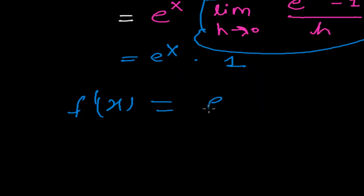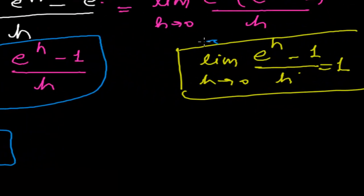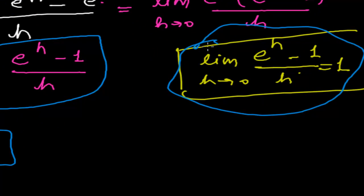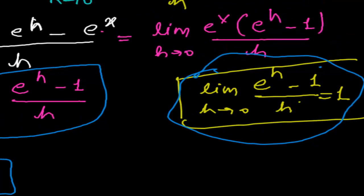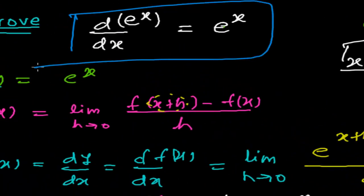Therefore the derivative of f of x is equals to e to the power x — and we've proved it! As I mentioned at the start, we needed a concept from the limits chapter. So you need to keep remembering all the limit results while studying derivatives — that's exactly why we learned limits first. After derivatives, we'll be learning integration. There are lots more things to cover, so we'll go step by step. I hope you understood this. We'll meet in the next video!